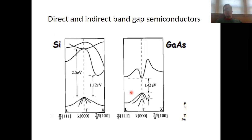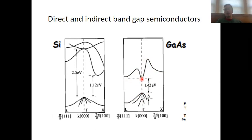In a direct bandgap semiconductor, the energy minimum of the conduction band lies directly on top of the energy maximum of the valence band within k-space. You see here the valence band, and you see that the maximum of the valence band and the minimum of the conduction band are at the same position in k-space, and that facilitates electron transitions from the valence band into the conduction band, so your quantum yield is high.